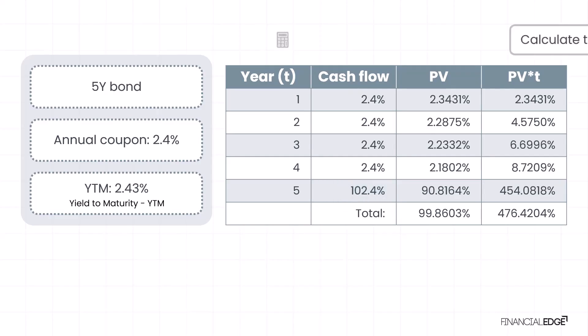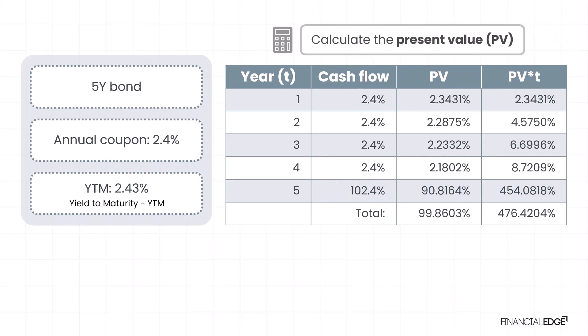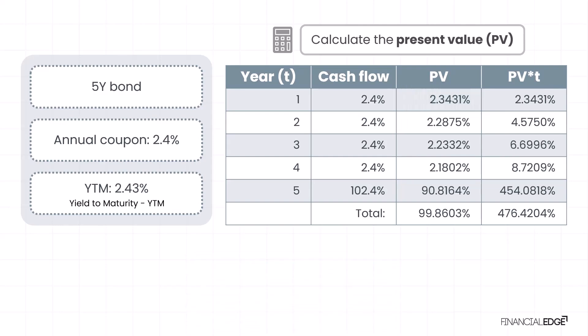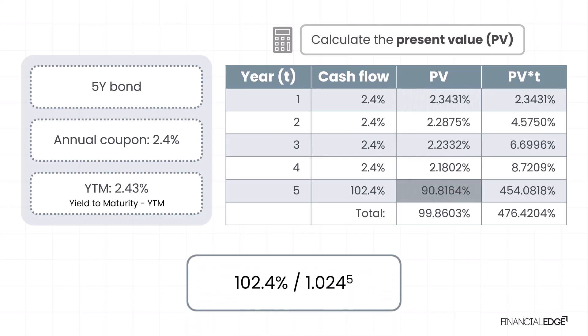The next step is to calculate the present value (PV) of these cash flows. Each cash flow is discounted by the yield to maturity (YTM) of 2.43 percent. The PV is determined by dividing each cash flow by one plus YTM to the power of T, where T represents the year in which the payment is received. For example, the present value of the first coupon of 2.4 percent is approximately 2.3431 percent, and the present value of the final cash flow in year five is 90.8164 percent.